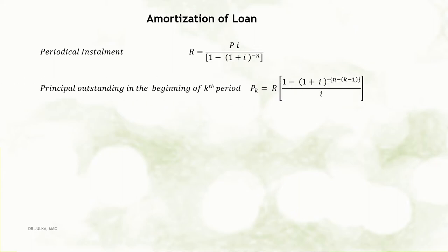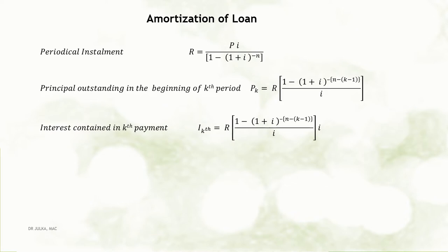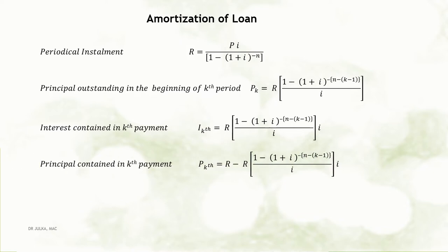If we want to calculate principal outstanding in the beginning of the kth period, it equals R multiplied by [1 minus (1 plus i) raised to the power minus (n minus k minus 1)], the whole divided by i. Interest contained in the kth payment can be calculated using the formula: R multiplied by [1 minus (1 plus i) raised to the power minus (n minus k minus 1)] divided by i, and the whole multiplied by i.